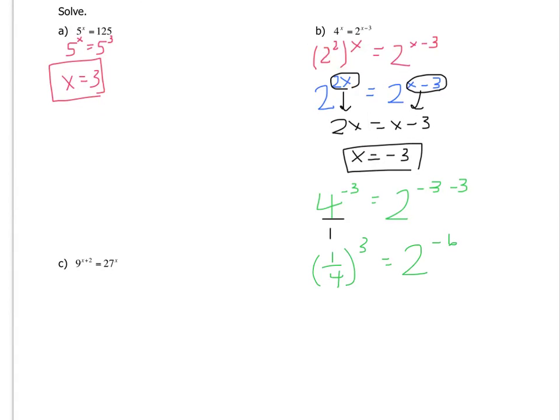So 1 over 4 to the 3rd is 1 over 64. And this becomes, again, I got a negative fraction, so I'll flip it. 1 over 2 to the 6th.